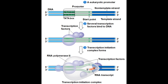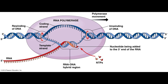Furthermore, transcription initiation in eukaryotes requires a collection of proteins called transcription factors. First, some transcription factors recognize and bind to the promoter elements like the TATA box. This is followed by the inclusion of an RNA polymerase, as well as several other transcription factors, forming the transcription initiation complex. Next comes elongation, which works pretty much the same in all domains. RNA polymerase unwinds the two strands of DNA and begins to join RNA nucleotides complementary to the DNA template strand in the 5' to 3' direction.